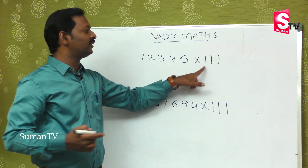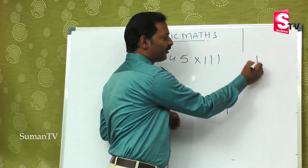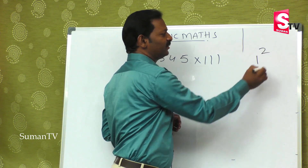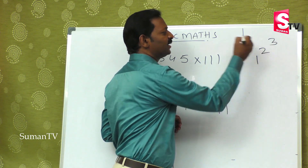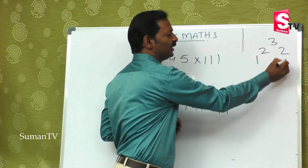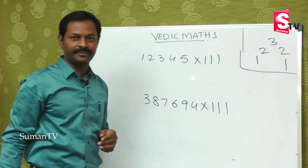So the concept with 3-digit multiplier works as follows: take 1st digit alone, then 1st + 2nd, then 1st + 2nd + 3rd, then 2nd + 3rd, then last 1 digit alone. This pattern gives us the right answer.